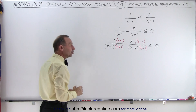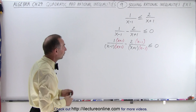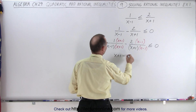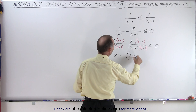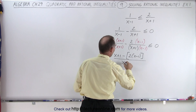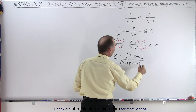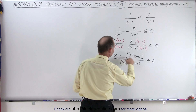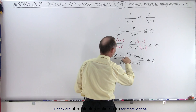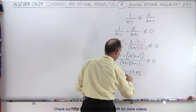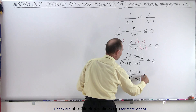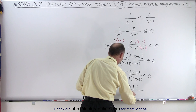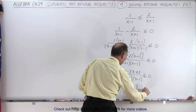We can write that left side into a single fraction before solving the rational inequality. This becomes x plus one minus two times x minus one, all over the common denominator x plus one times x minus one, less than or equal to zero. Continuing to solve, that gives us x plus one minus two x plus two, all divided by x plus one times x minus one, which simplifies to negative x plus three divided by x plus one times x minus one, less than or equal to zero.